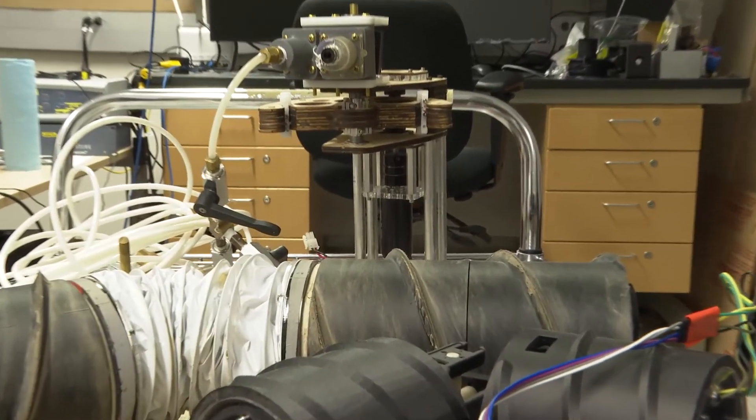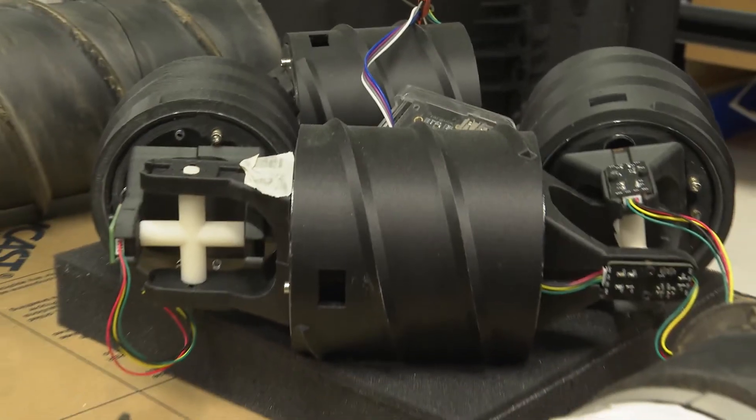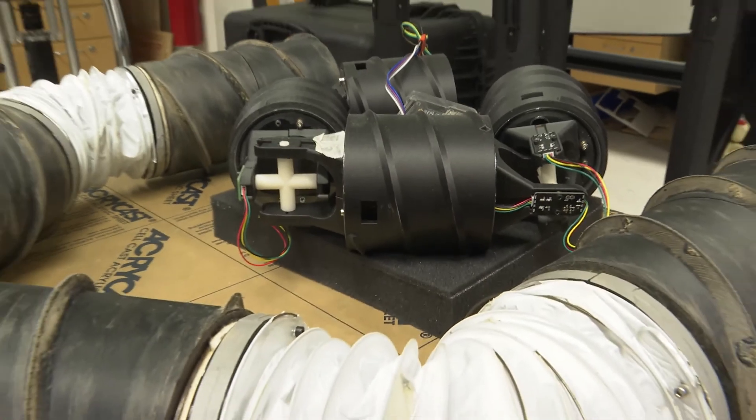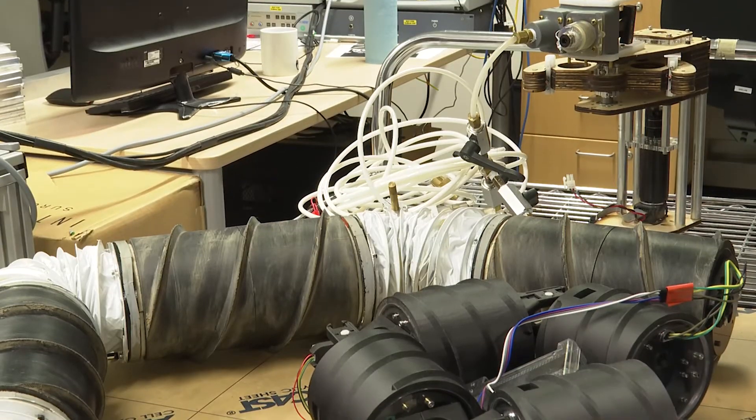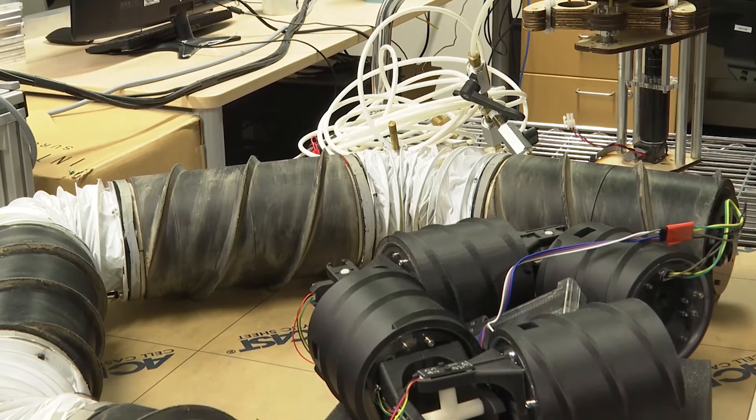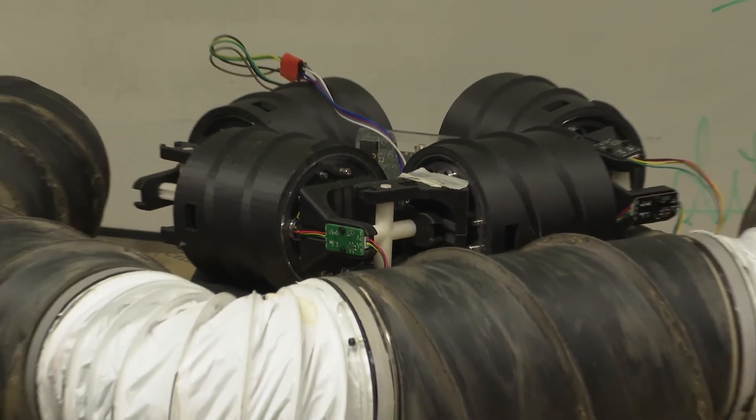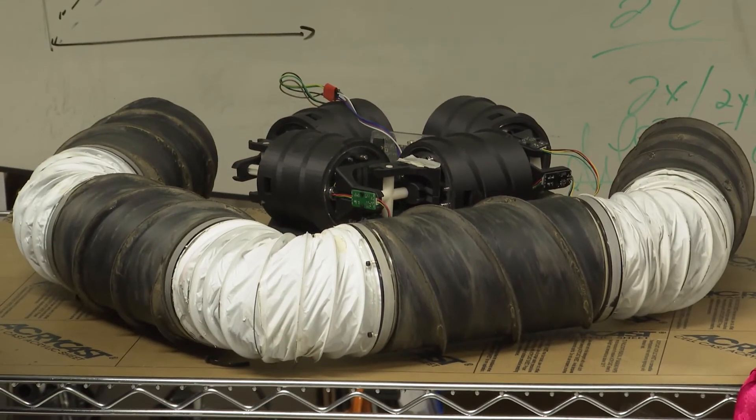We anticipate that Archimedean screw propulsion would be an effective form of locomotion when navigating the tortuous caves, and the snake-like hyperredundancy can be used to descend down the plume vents.